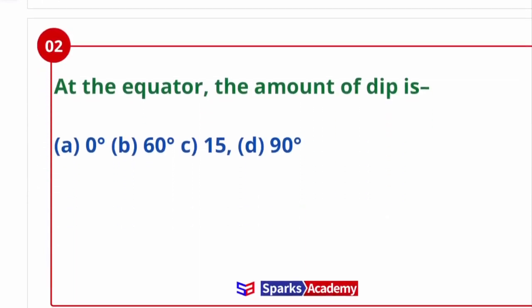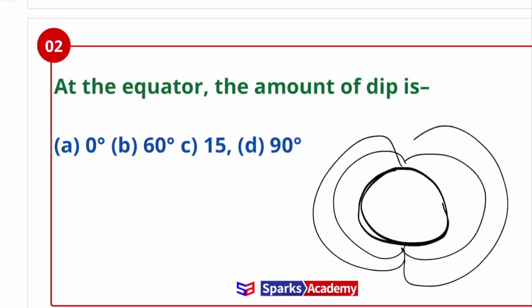Next question: At the equator, the amount of dip is what? Dip: due to the magnetic field, the needle will have some deviation. That is called dip. The dip at the equator is zero, and at the poles, the dip is 90 degrees. At the equator, the dip is zero. At the poles, north and south poles, it's 90 degrees. So the answer is zero. That is the correct answer.